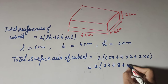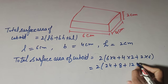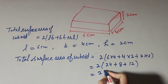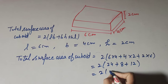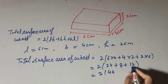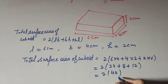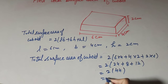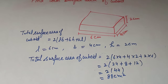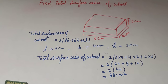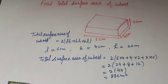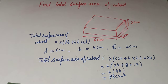Adding the terms: 24 plus 8 plus 12 equals 44. Then 2 multiplied by 44 equals 88 centimeters square. So the total surface area of the cuboid is 88 centimeter square. Thanks for watching.